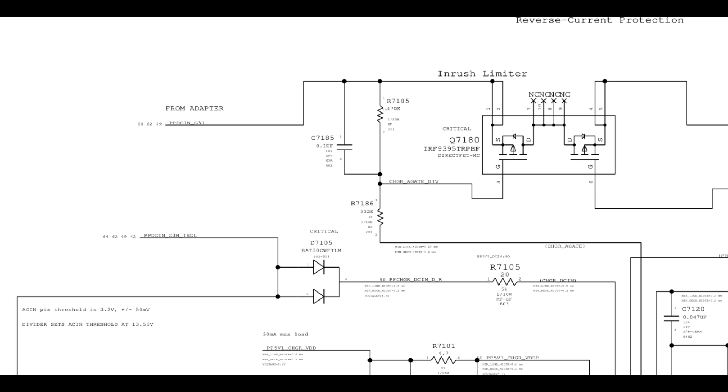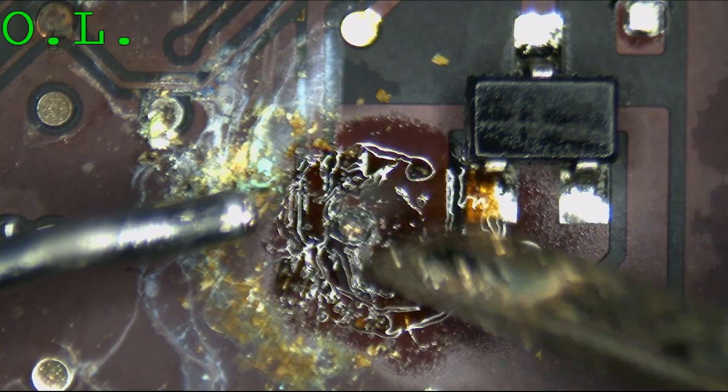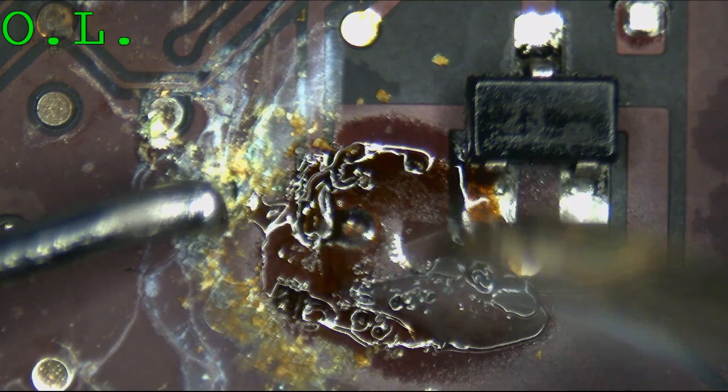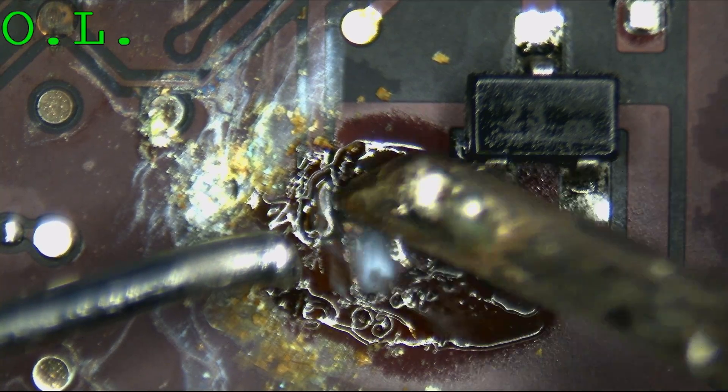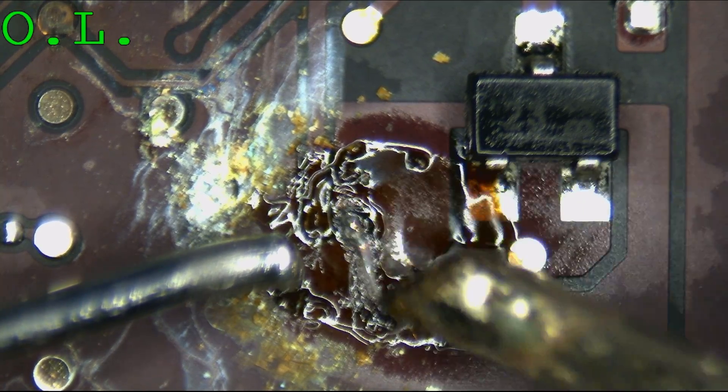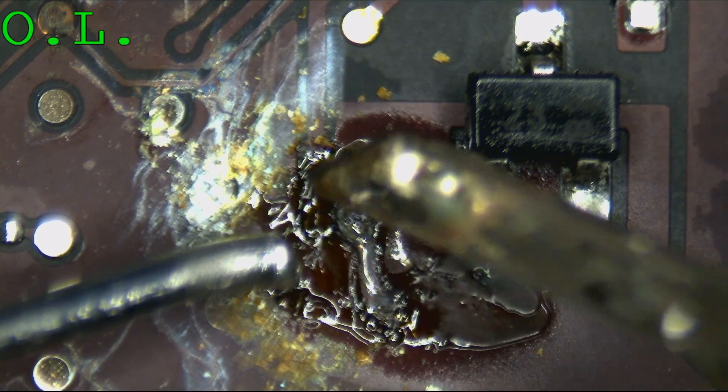So let's find a donor board and get their resistor. That pad does not look like it's coming back.